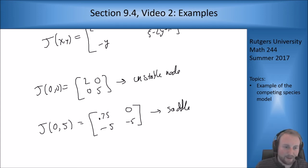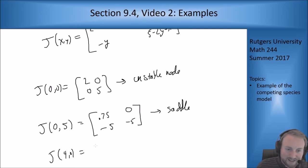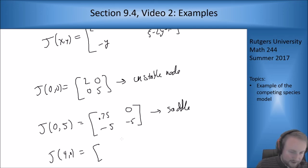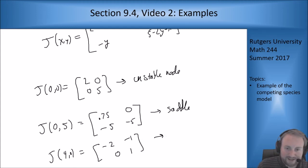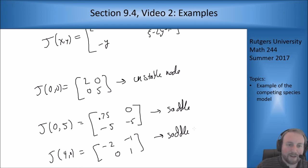If I plug in (4, 0), I get something that looks similar: the matrix [minus 2, minus 1; 0, 1], which again is a saddle point. We want it to be unstable, and we're getting a saddle point — that's good.